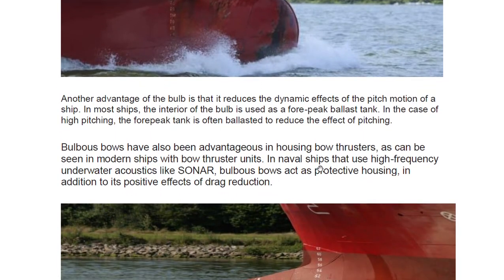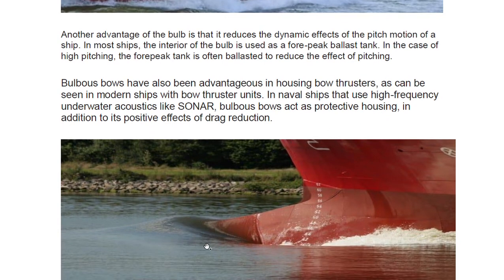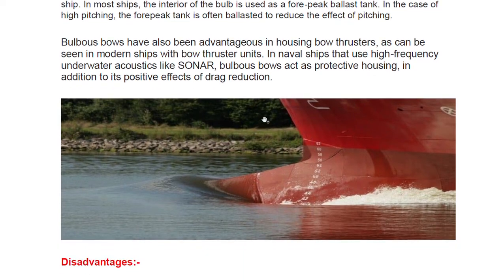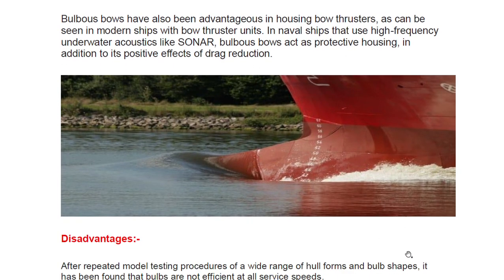Bulbous bows also offer advantages in housing bow thrusters, as seen in modern ships. In naval ships that use high-frequency underwater acoustics like sonar, the bulbous bow acts as a protective housing in addition to its positive effect on drag reduction. So to summarize: drag is reduced, the dynamic pitching effect is reduced, ballast tanks are housed inside, and in naval ships both sonar and bow thrusters can be placed within the bulb.